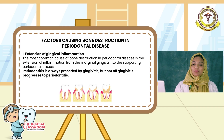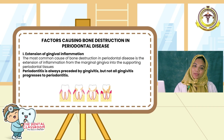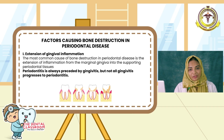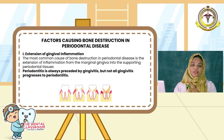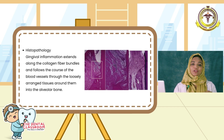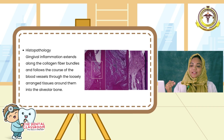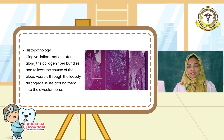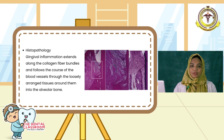Let us start with the number one factor causing bone destruction. It is the extension of the inflammation from the marginal gingiva to the supporting periodontal tissue. We all know that periodontitis is always preceded by gingivitis, but not all gingivitis progresses to periodontitis. On microscopic examination, you can see the gingival inflammation extending along the collagen fiber bundle, following the course of blood vessels through the loosely arranged tissues around them into the alveolar bone.